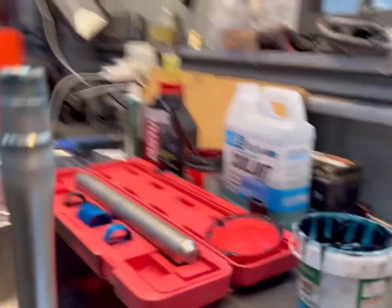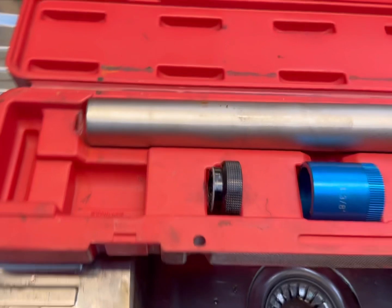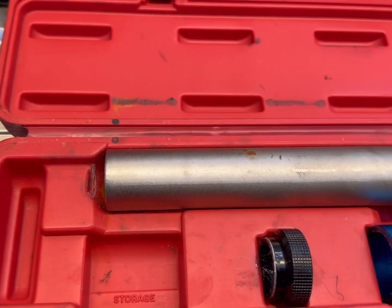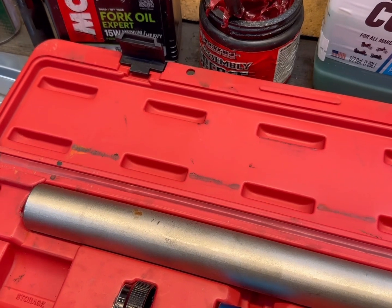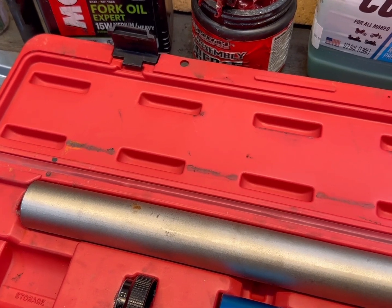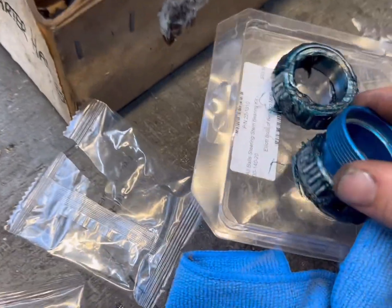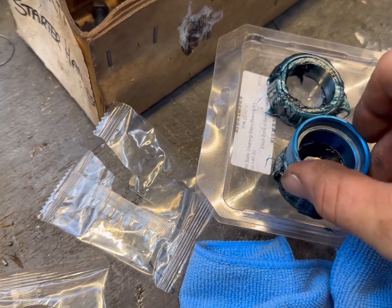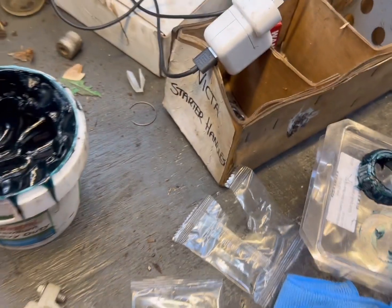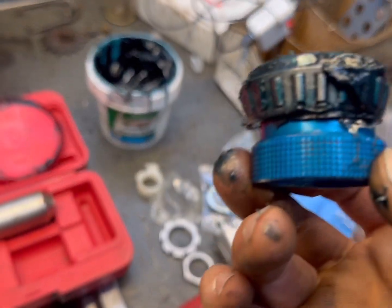Then we're going to use this handy head stem bearing installer here. You just want to find one that fits that inner race so you're not hurting the cage or the bearing. This one's a nice fit there.